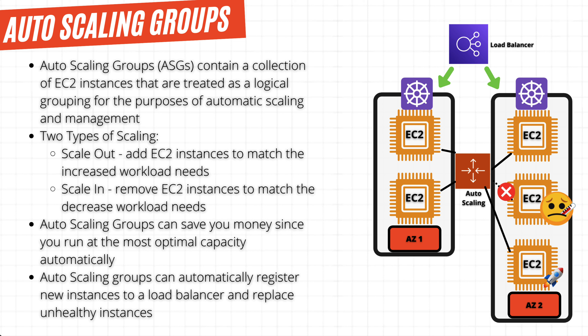By configuring the auto-scaling groups with a minimum of instances we can run our workload with, and with a maximum we project our workload will require, this in turn will save us money, because we will always be running with the necessary number of instances.